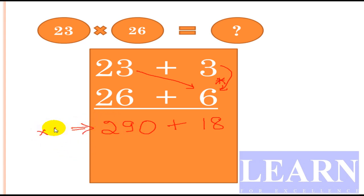But before adding this, we need to take the double of it because it is of base 20. So 29 × 2 is 58, so I'll take 580. Double of 290 is 580. 580 + 18 gives 598. That's our final answer.